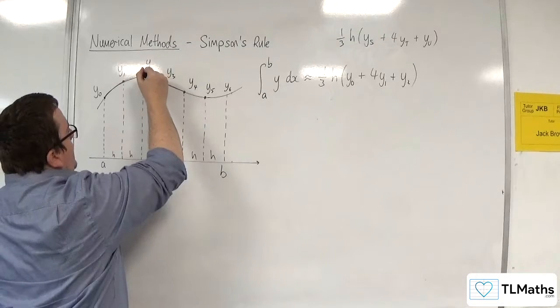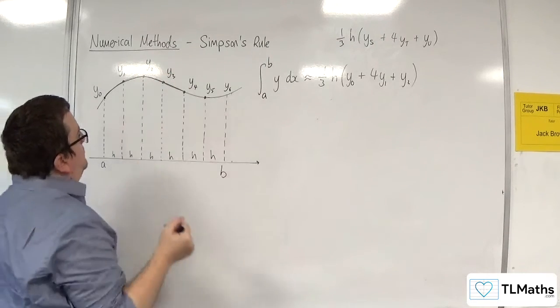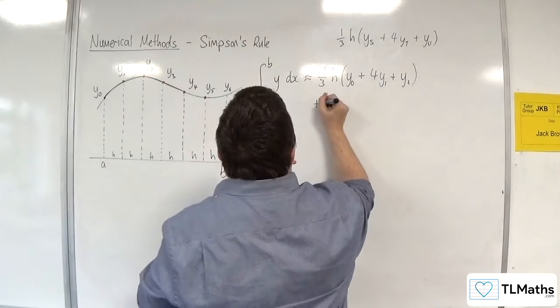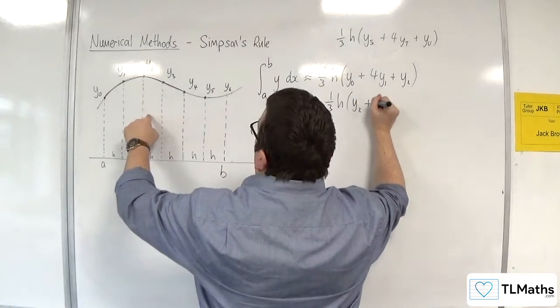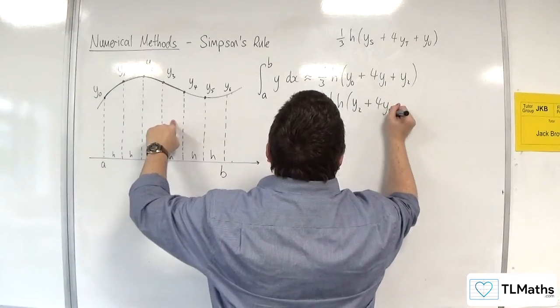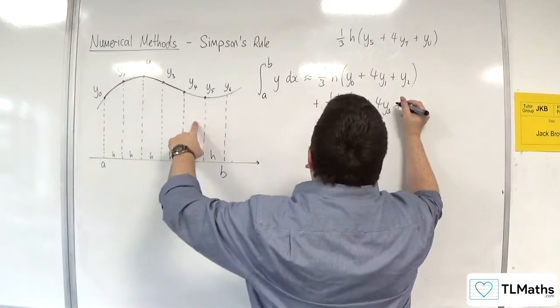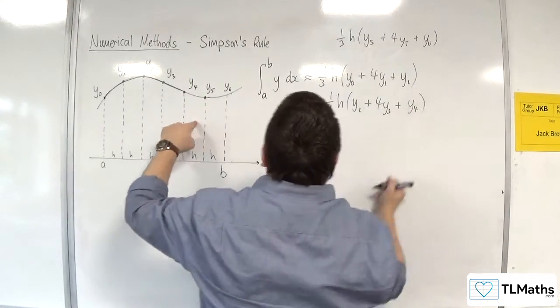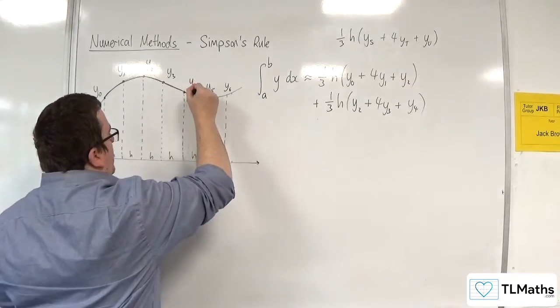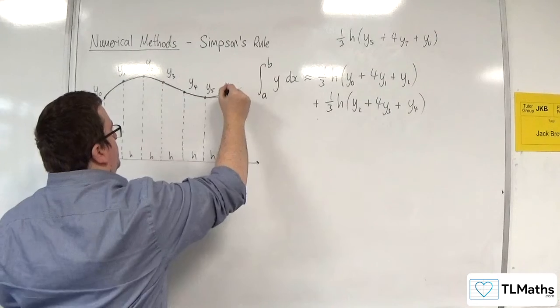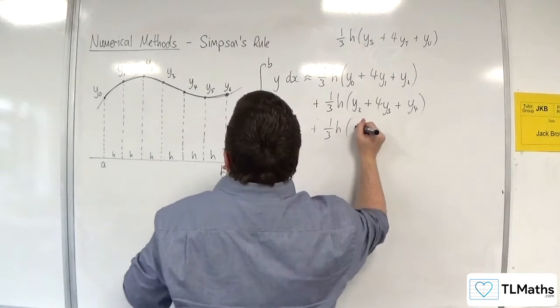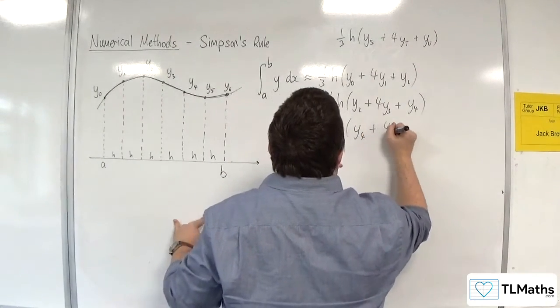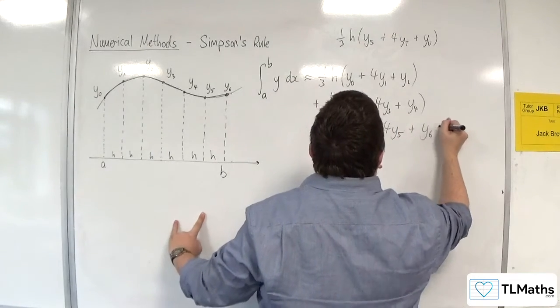Then I need this second one. So, plus one third h. And it will be y2, four lots of y3, and then one lot of y4. And then I've got the last bit, which will be one third h. We've got the y4. We've got four lots of the y5. And then we've got the y6.